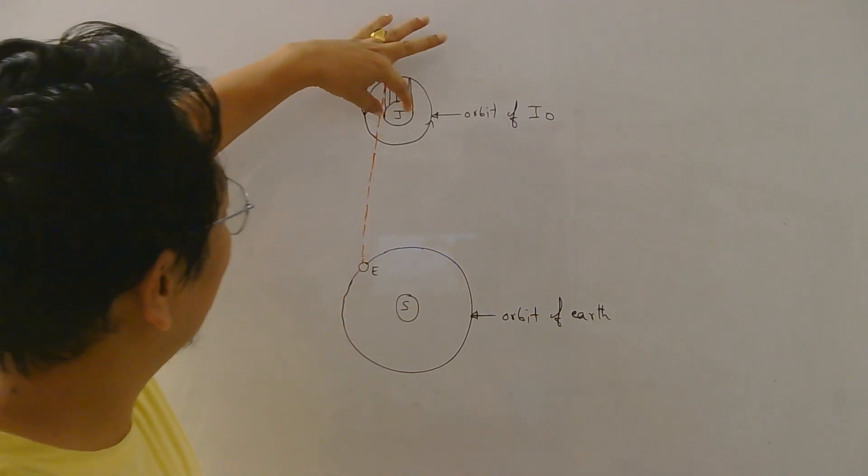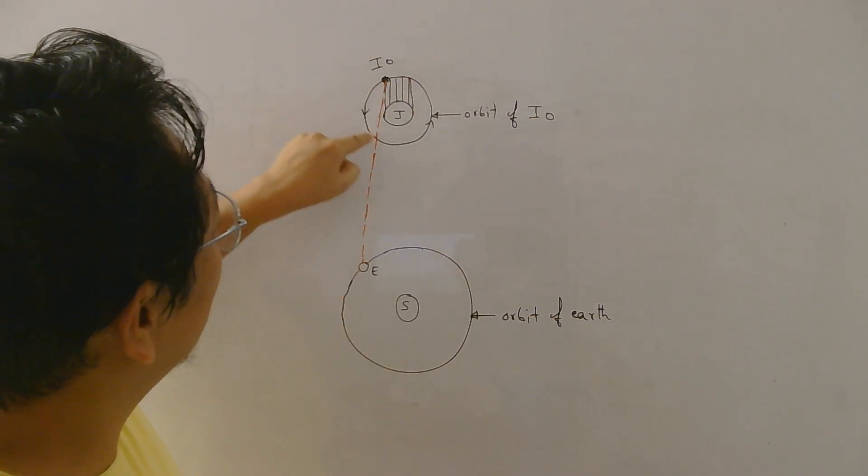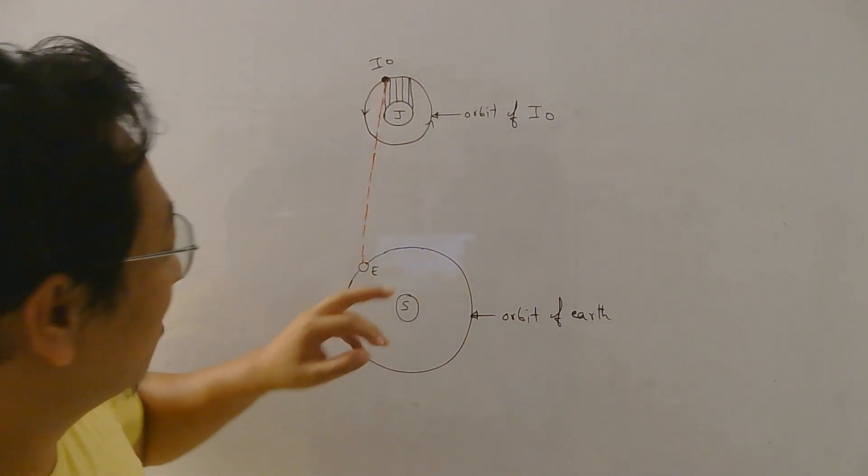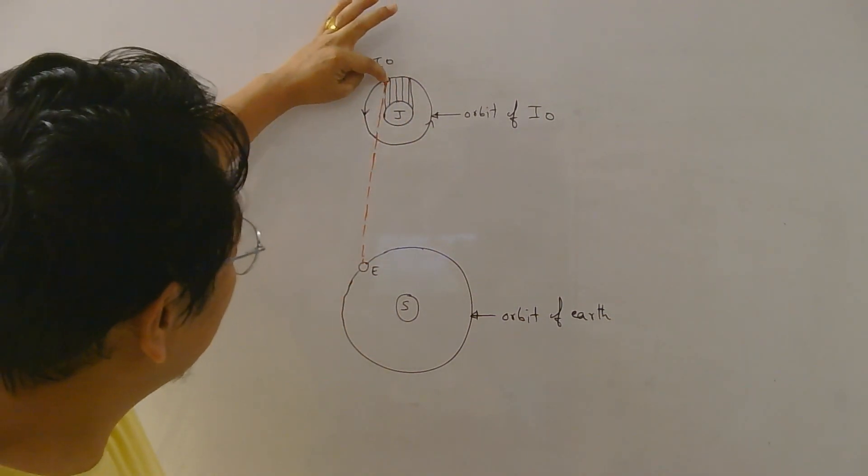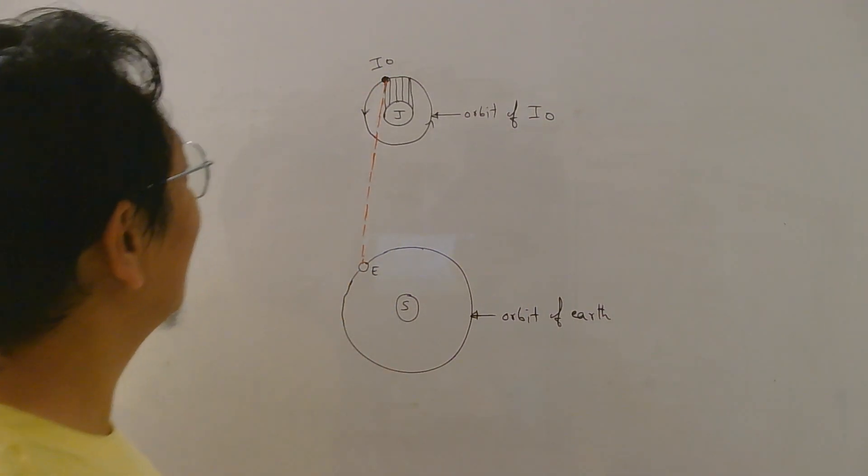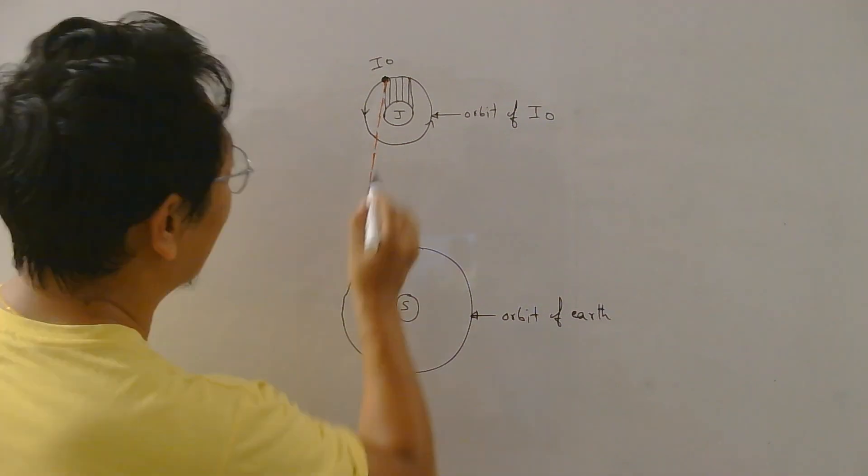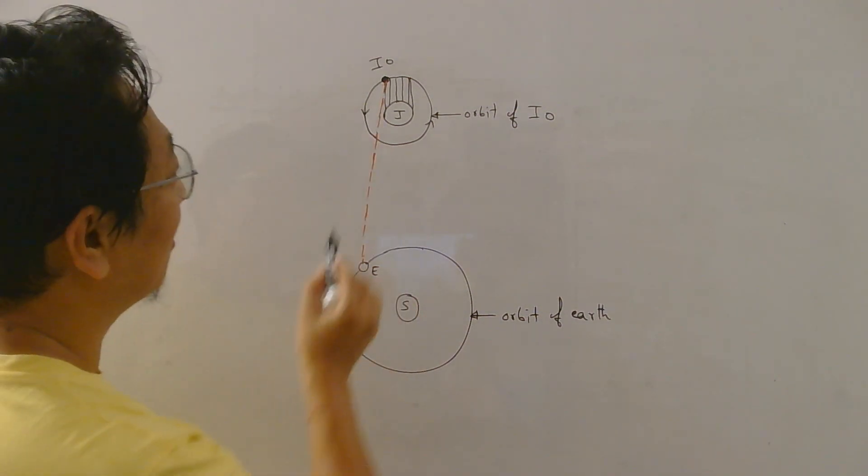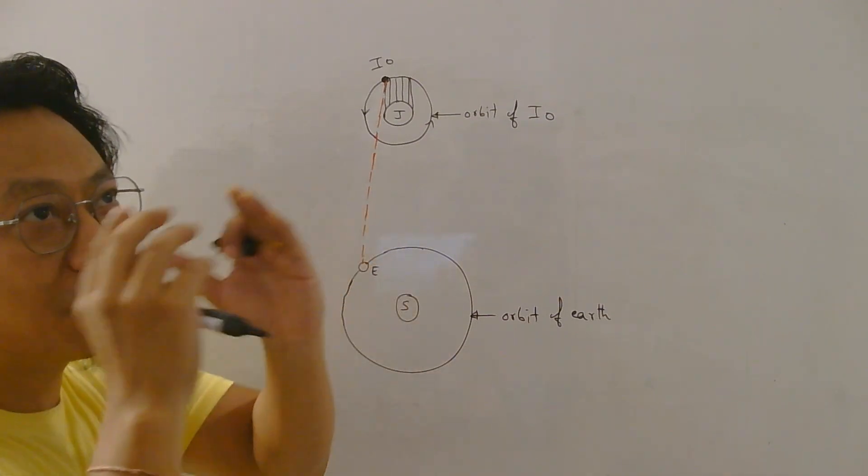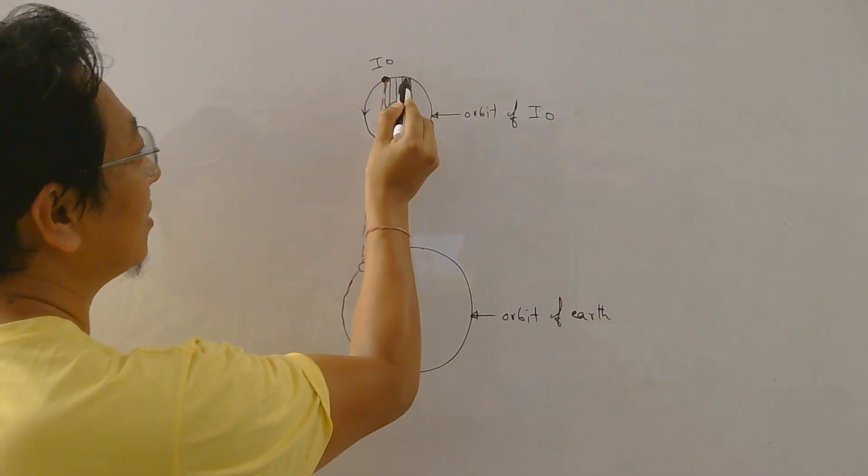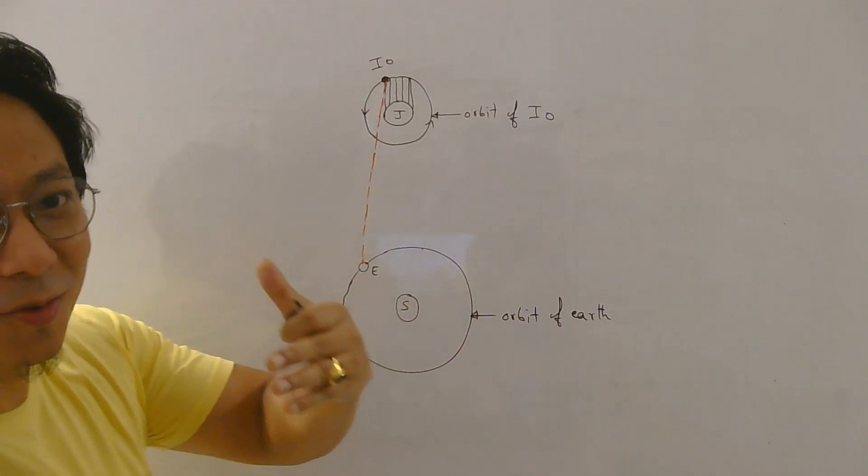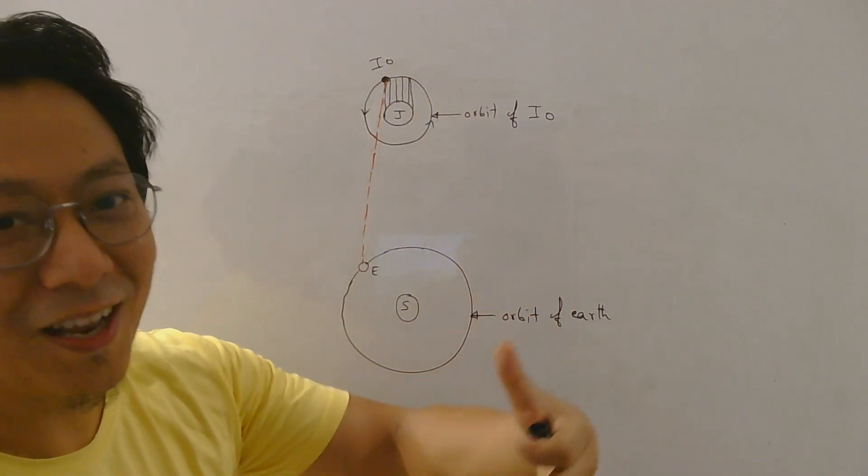Now this is the shadow of Jupiter and every time the moon enters the shadow it will not be visible from earth, and every time it comes out of the shadow it will be visible from earth. Now let's say you are waiting from here for the moon to come out of the shadow. You are going to now see the moon. You don't see the moon here, you don't see the moon, you don't see the moon, and then you see the moon. So you are waiting for the rise of the moon, just like we wait for sunrise.